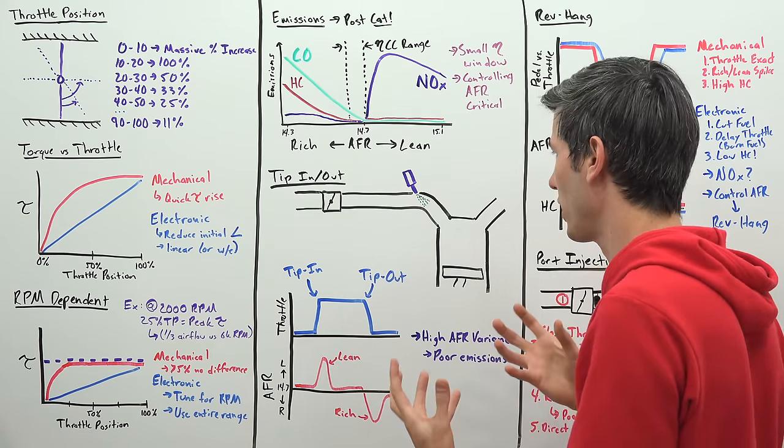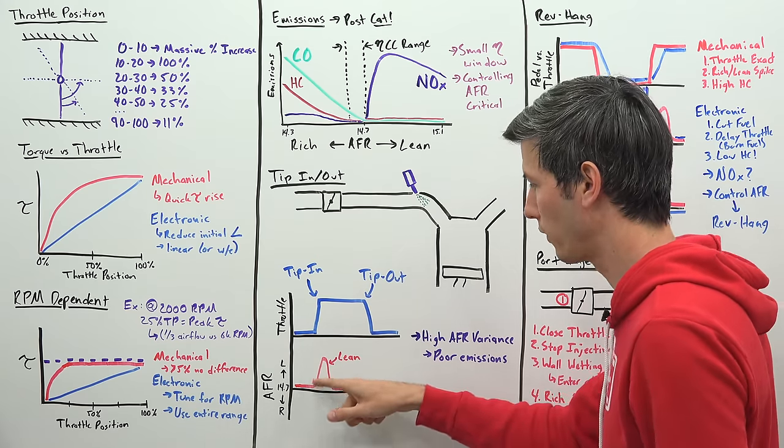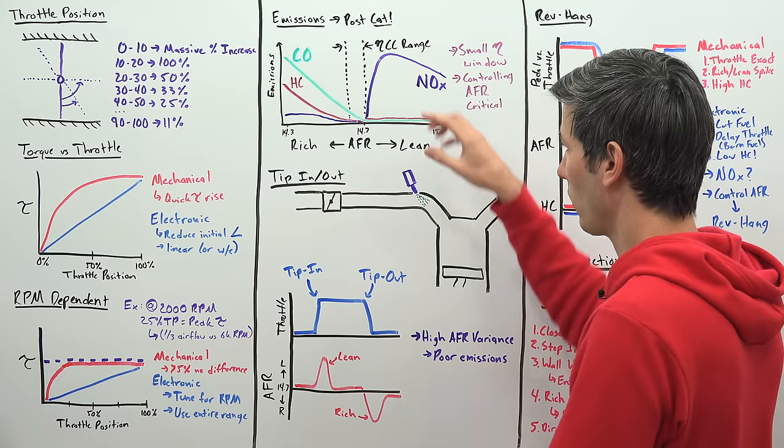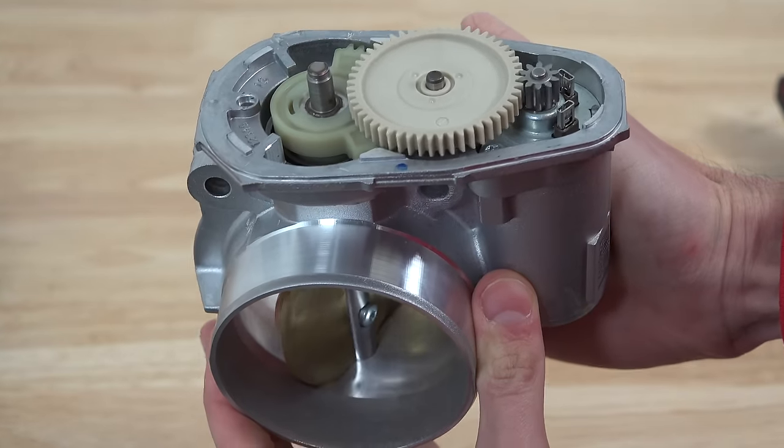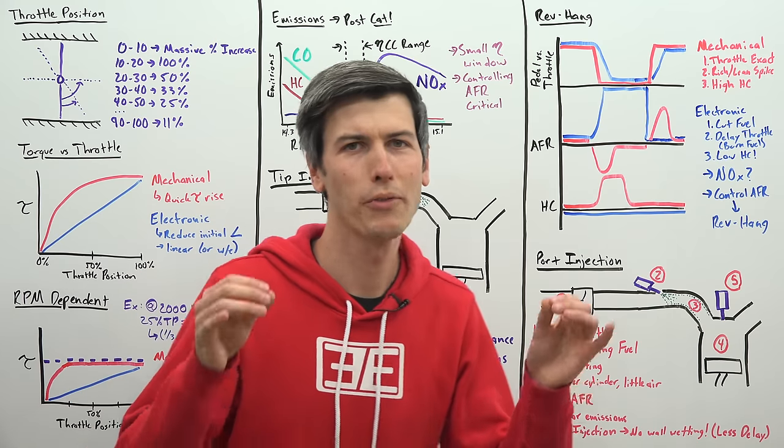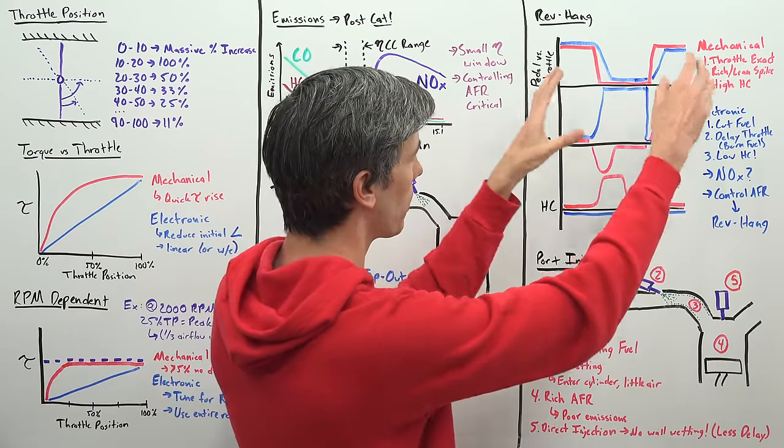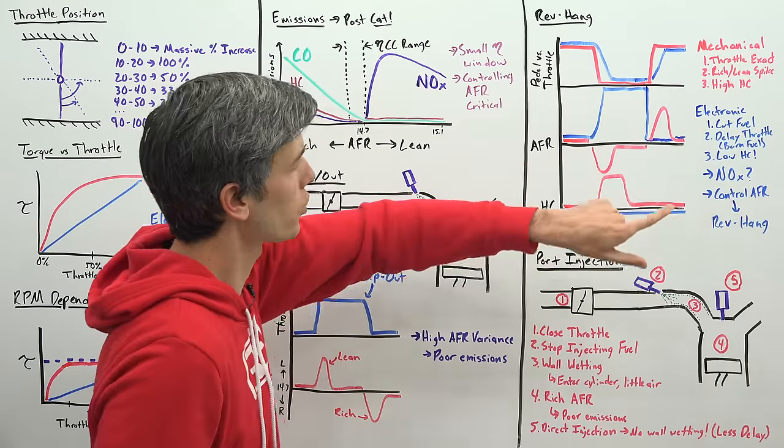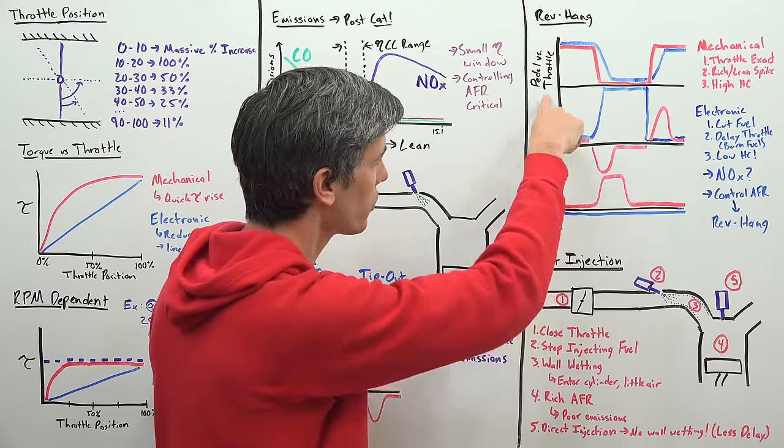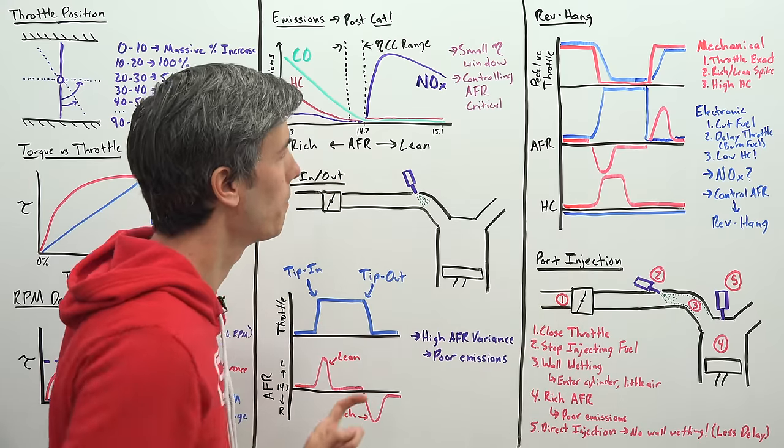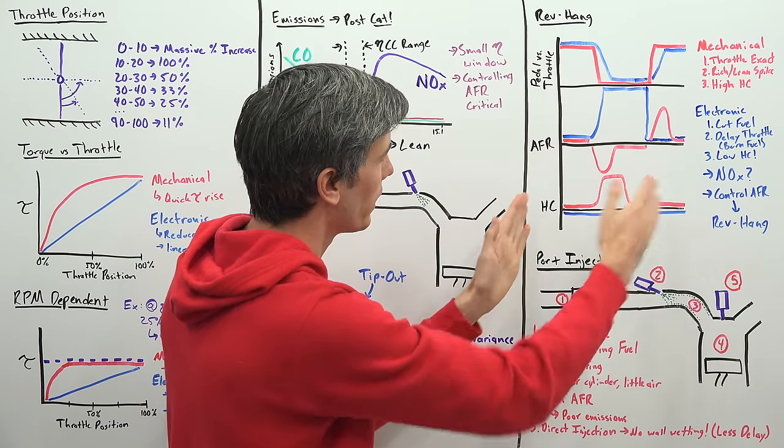And so the challenge here is that you want to maintain kind of a flat line here of that air fuel ratio, rather than these big variances that you see in order to keep it out of these regions where emissions will be poor. Enter the electronic throttle valve. So here's where we finally get to understand why rev hang exists. Looking at the results of this study, comparing a mechanical throttle body in red to an electronic throttle body in blue here. And so we're looking at the throttle position, the air fuel ratio, and hydrocarbon emissions. And so what they noticed during a gear shift, what we're looking at right here is a gear shift.